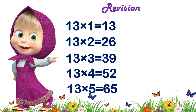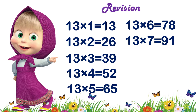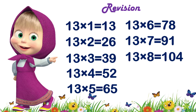Thirteen fives are sixty-five. Thirteen sixes are seventy-eight. Thirteen sevens are ninety-one. Thirteen eights are one hundred and four.